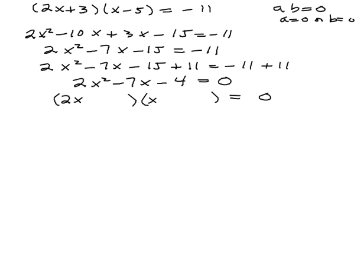Because it's negative 4, then we could either have plus 2 minus 2, or negative 1, 4, or positive 1, negative 4. If we look at the middle term negative 7, we need a pretty big one. So let's try negative 4 over here and plus 1 here.